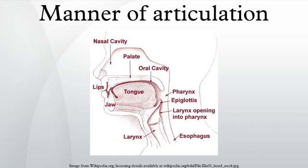Lateral fricatives are a rare type of fricative where the frication occurs on one or both sides of the edge of the tongue. The 'll' of Welsh and the 'hl' of Zulu are lateral fricatives. Affricate: which begins like a stop but releases into a fricative rather than having a separate release of its own. The English letters 'ch' and 'j' represent affricates. Affricates are quite common around the world, though less common than fricatives.